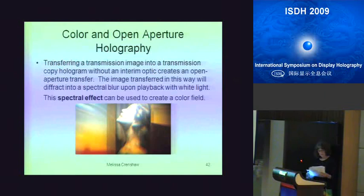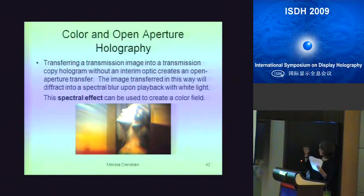In the center of the hologram, a condensing lens was utilized during recording between the master and the H2 to create an optical reduction of the transferred image from the pulse master. Optically reducing an open aperture image and positioning the film at the focal plane keeps it from dispersing into its spectral colors. My face in that image is only about six by four inches — quite small, having been optically reduced.